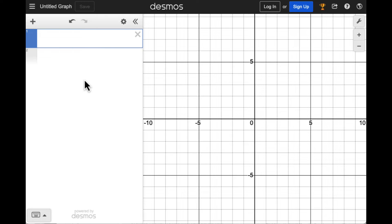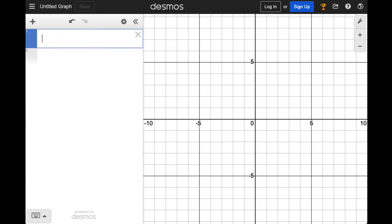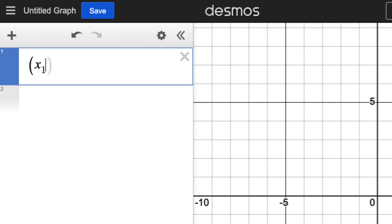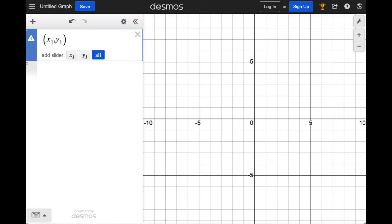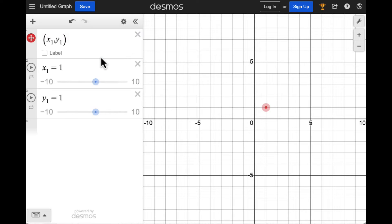Input the coordinates x1, y1. You'll be asked if you want to create sliders for x1 and y1. You do, so click the All button. You'll see two sliders, one for x1 and one for y1. Click on Label to display the coordinates.